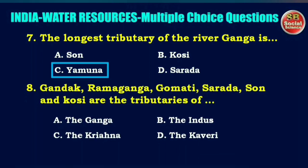Next question: Gandak, Ramaganga, Gomati, Sarada, Son and Kosi are the tributaries of — options are the Ganga, the Indus, the Krishna, or the Kaveri. The right answer is option A: the Ganga.